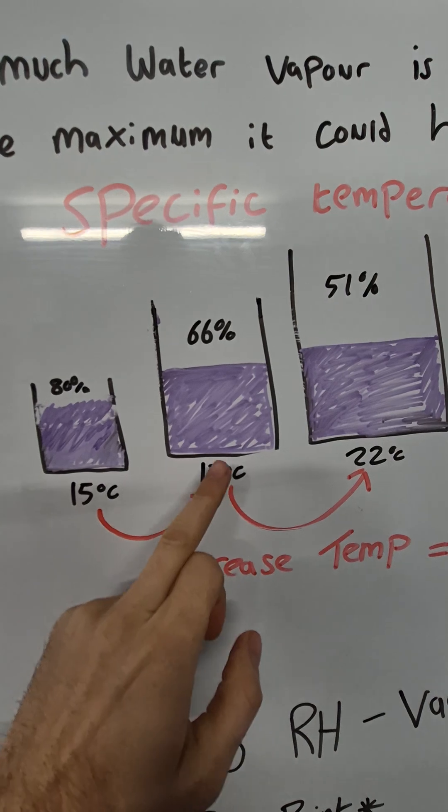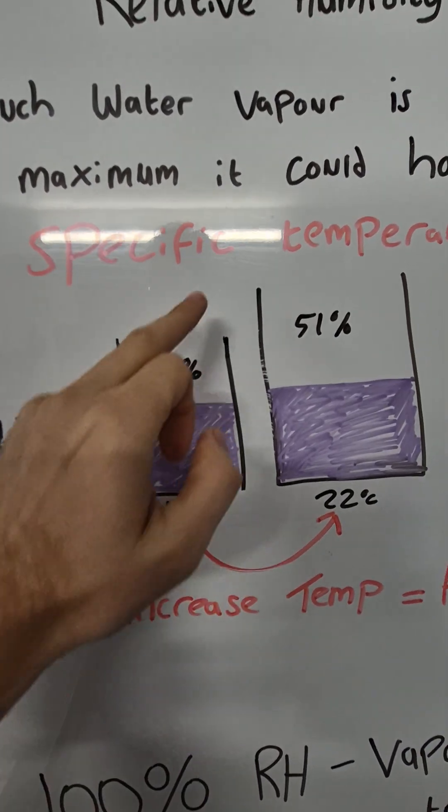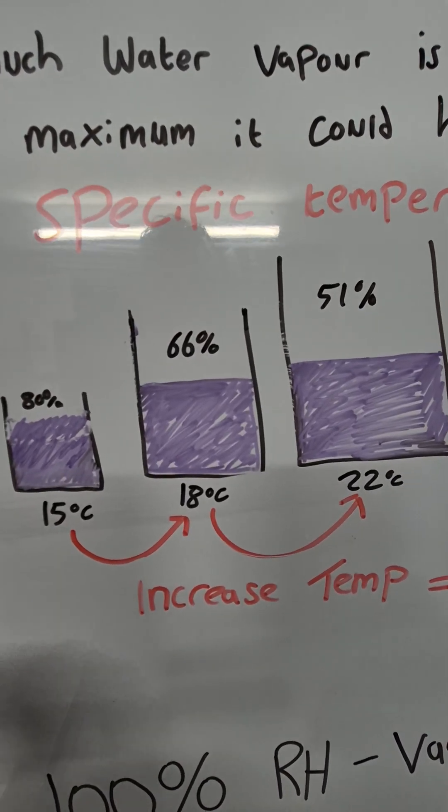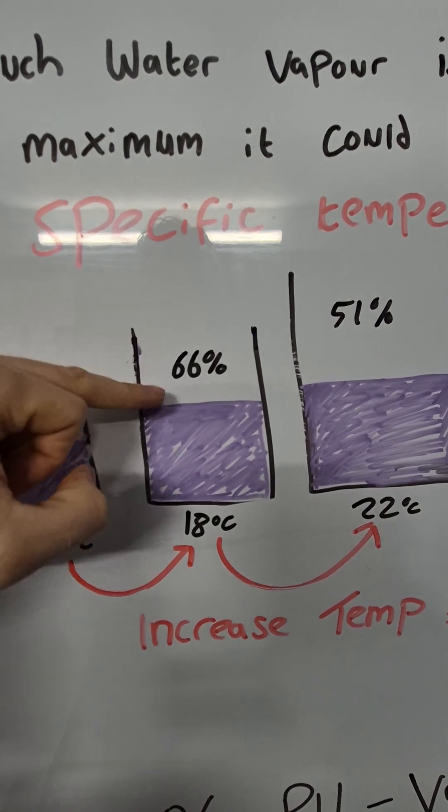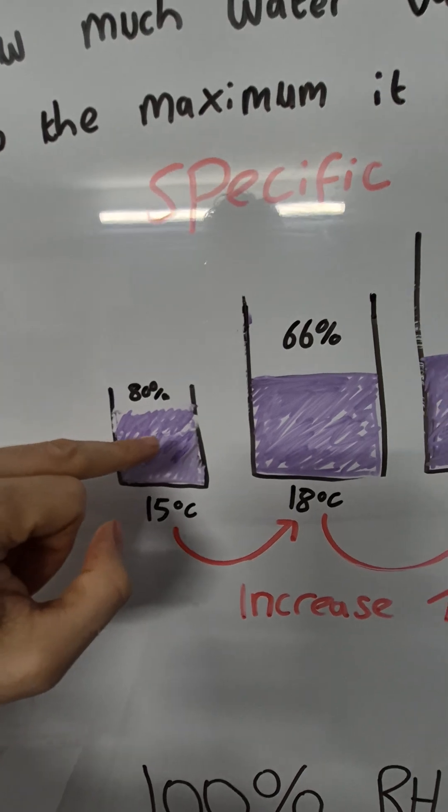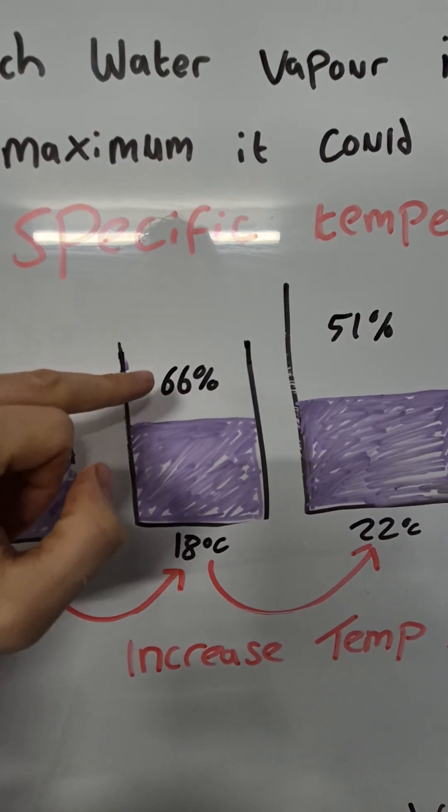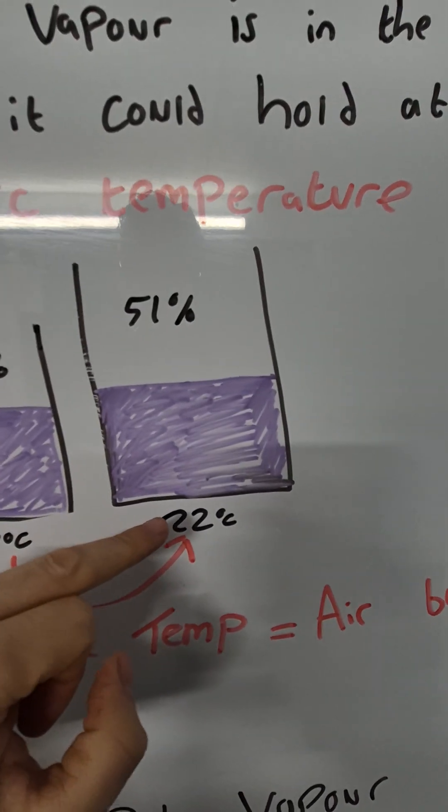If we increase the temperature, the bucket or the air increases its capacity to hold more water vapour. Suddenly, the relative humidity drops. The amount of water vapour in the air is the same as here, but the relative humidity drops. Same here. Let's go to 22 degrees.